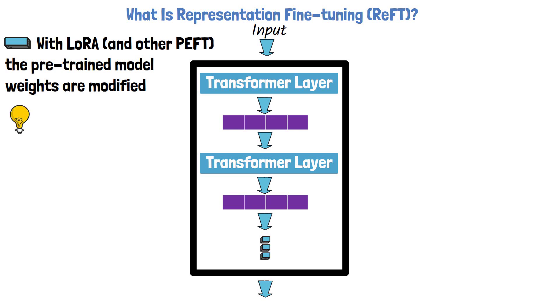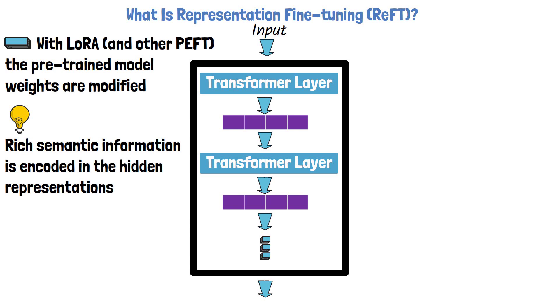This is also the case for other parameter efficient fine-tuning methods. A key learning from previous research is that the hidden representations we get after each layer encode rich semantic information, and by playing with the pre-trained model weights we also impact the hidden representations that we get. This leads us to the key idea with representation fine-tuning, which is that editing the representations as we get them from the original pre-trained model may be a more powerful technique.